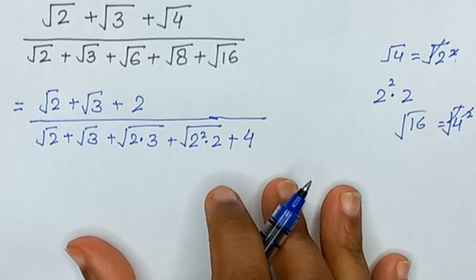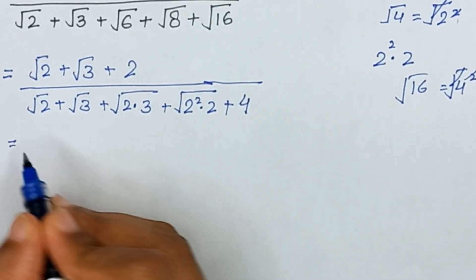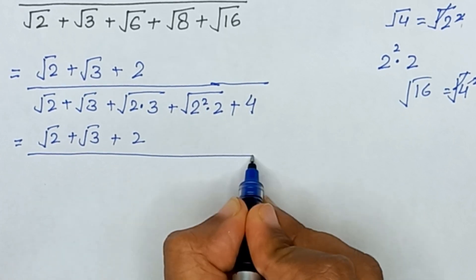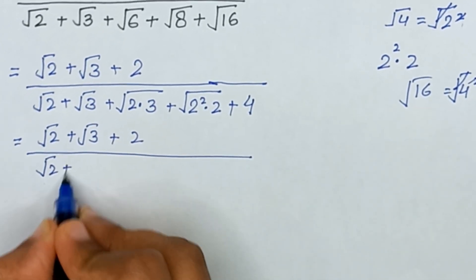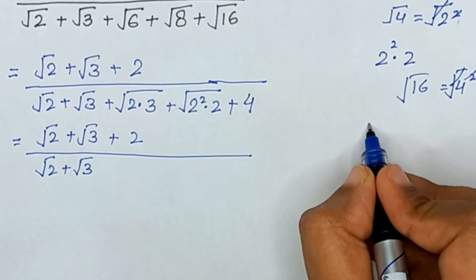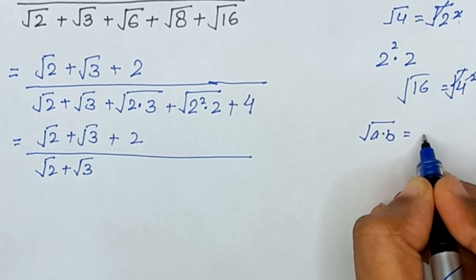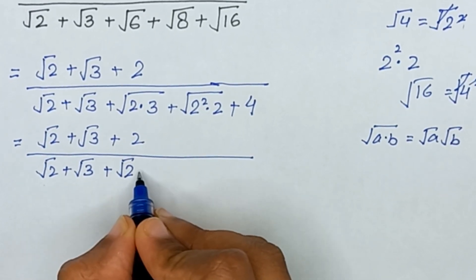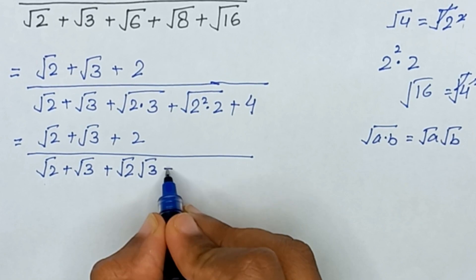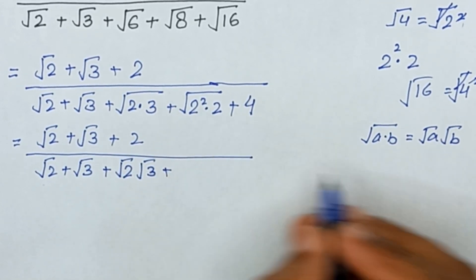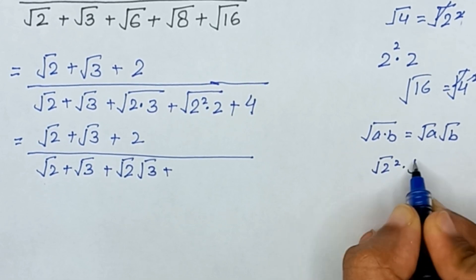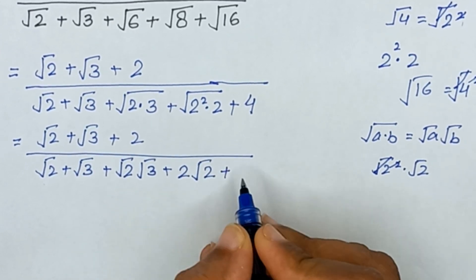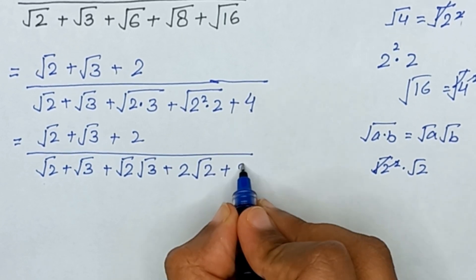Square root of 16 is the same as 4 squared, so the square and square root cancel out, giving us 4. Now, using the rule that square root of a times b can be written as square root of a times square root of b, we apply this to get square root of 2 squared into square root of 2. The square and square root cancel, giving 2 times square root of 2. And 4 can be written as 2 plus 2.